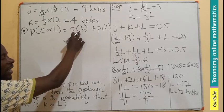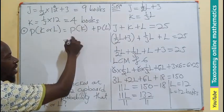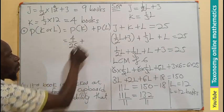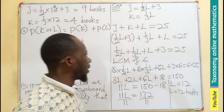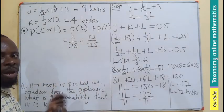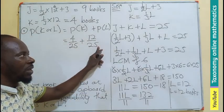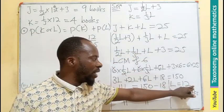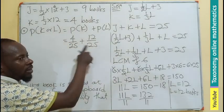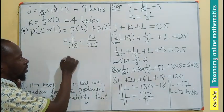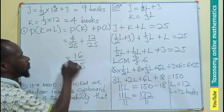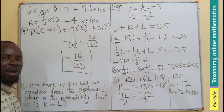The probability of K equals the number of K books over total books, which is 4 over 25. The probability of L equals 12 over 25. Since the denominators are the same, we add the numerators: 4 plus 12 equals 16, giving a probability of 16 over 25.